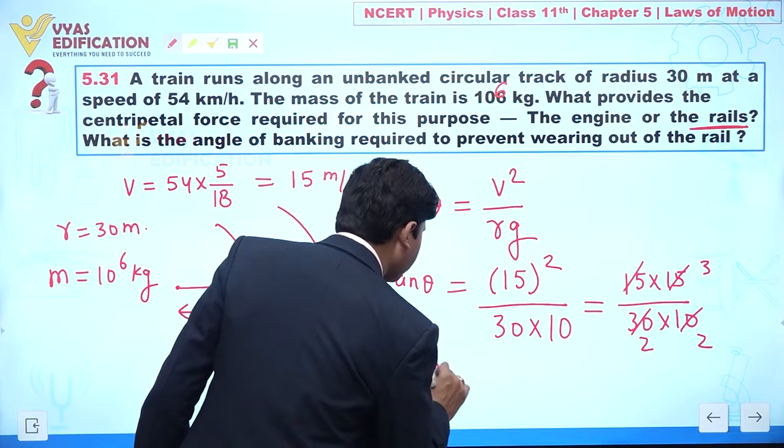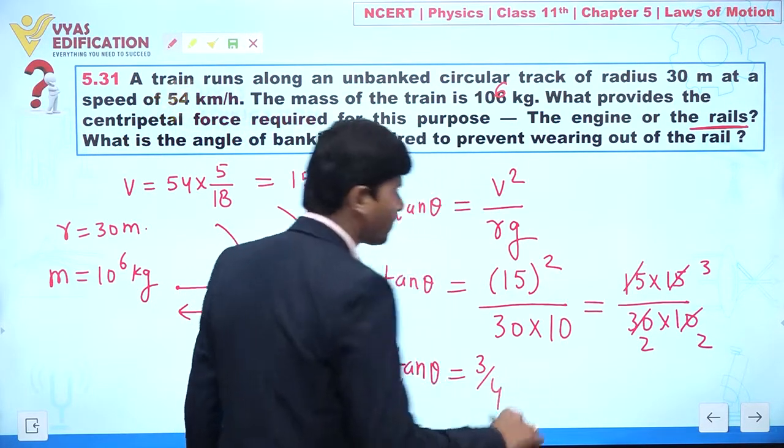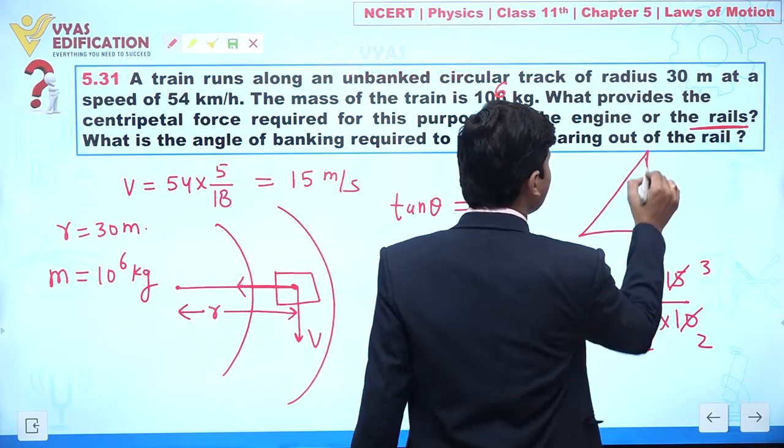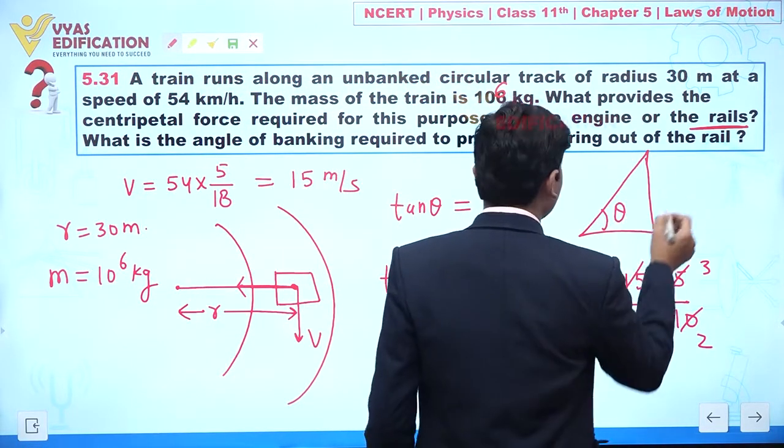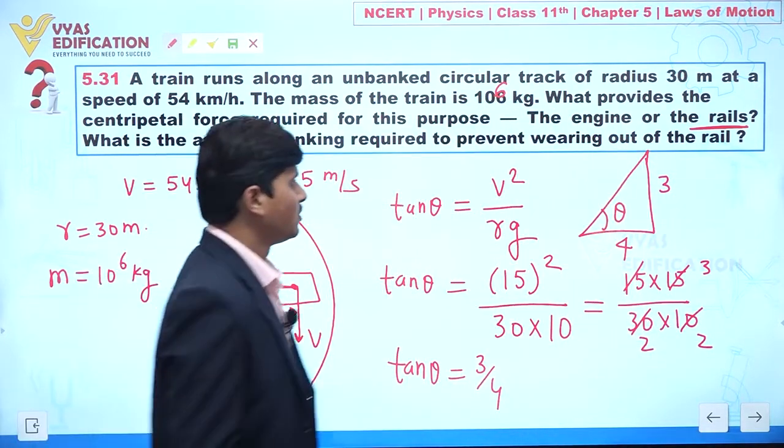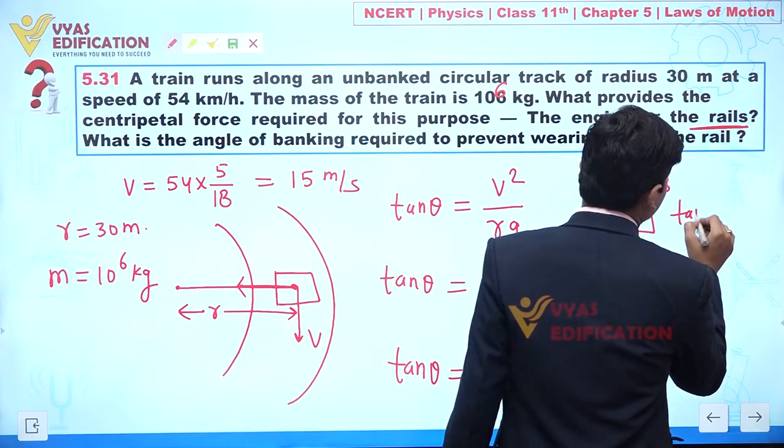From here I can write tan θ is given by 3 by 4. Now if you know a right-angle triangle, we can say let's suppose this is 3, this one is 4.